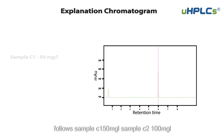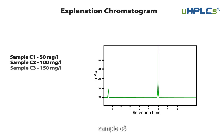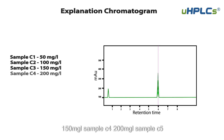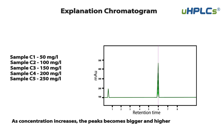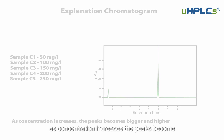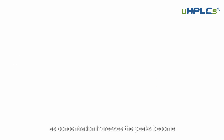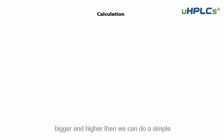Five samples are prepared: C1 at 50 mg/L, C2 at 100 mg/L, C3 at 150 mg/L, C4 at 200 mg/L, and C5 at 250 mg/L. As concentration increases, the peaks become bigger and higher.